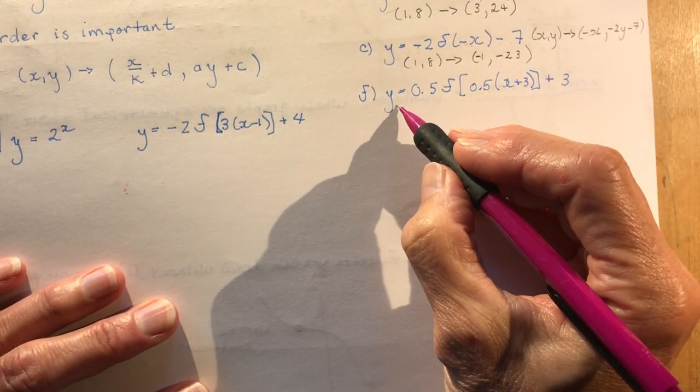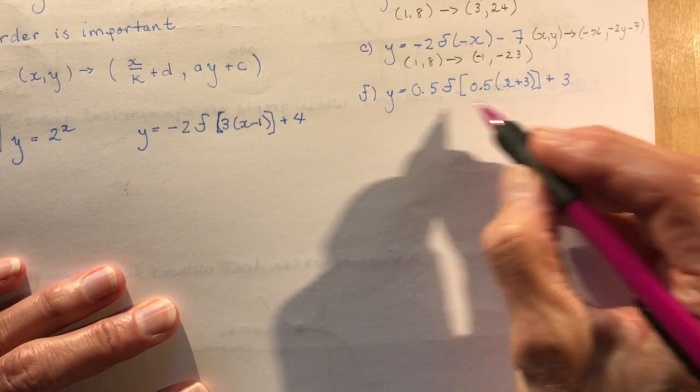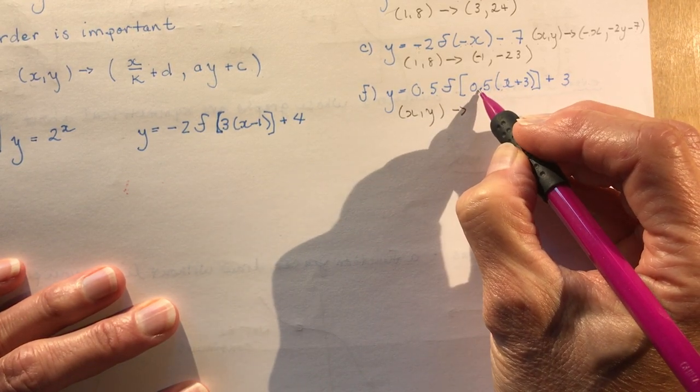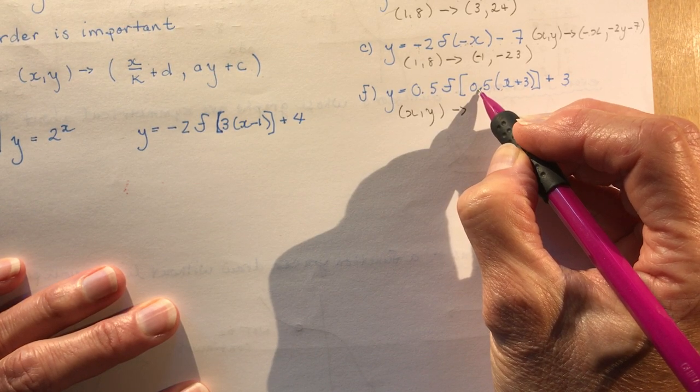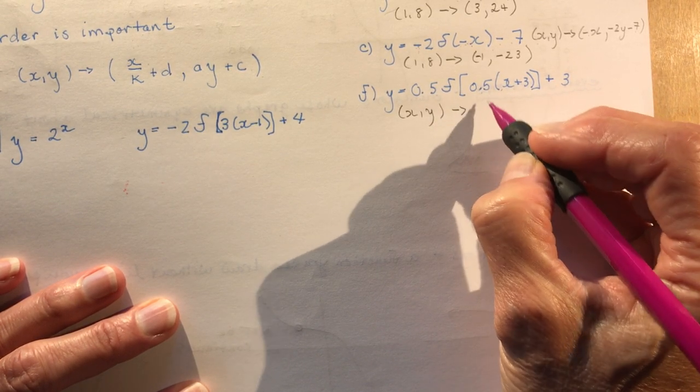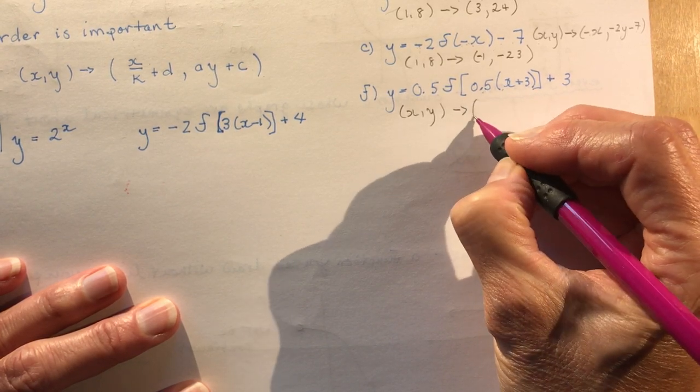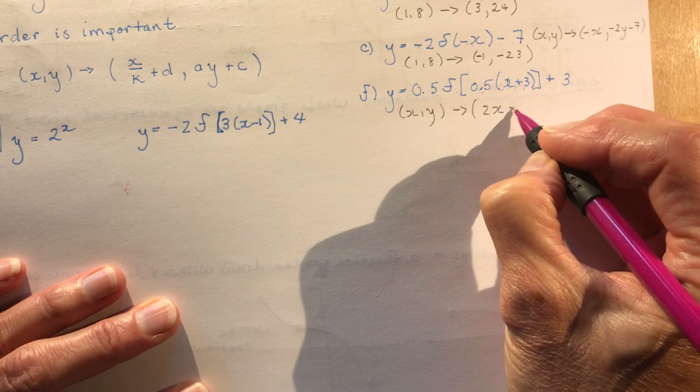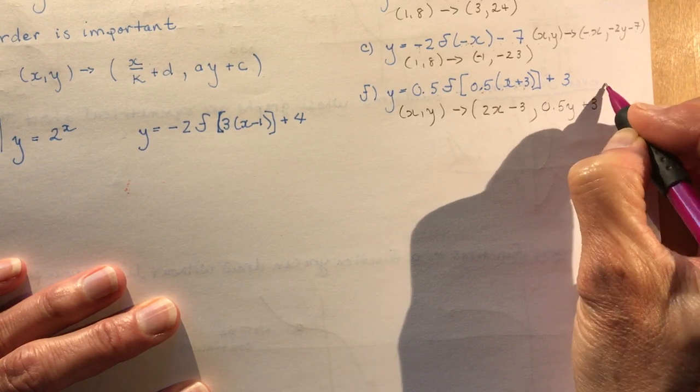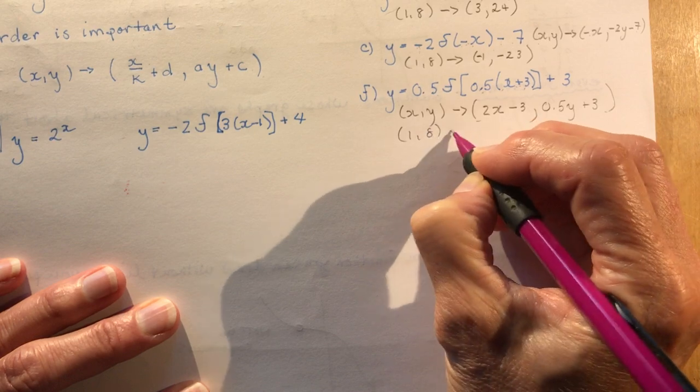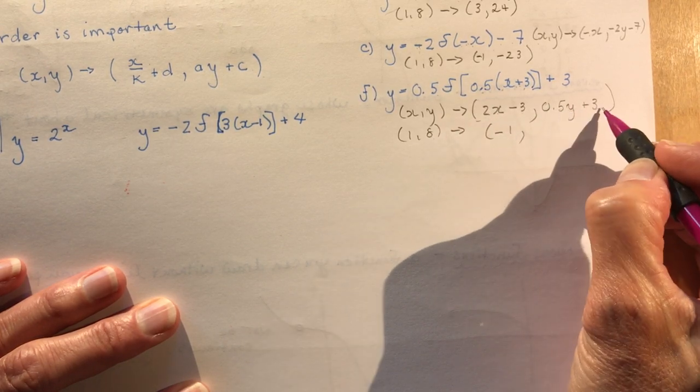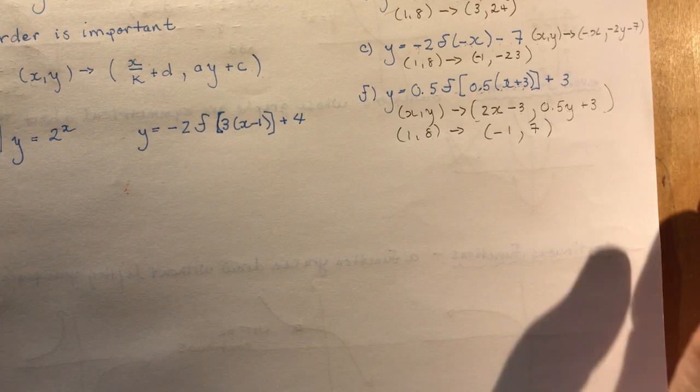And the last one here, I've got all kinds of things going on. That's about as many things as you can possibly do except there's no reflections in there. So let's take a look at the mapping rule. x, y, 0.5. That's a half. So dividing by a half means multiplying by 2, right? 1 divided by half is 2. 1 divided by half, you invert and multiply the fraction. So that's going to give me 2x's. And then I subtract 3. And this one's straightforward. So this is 0.5y plus 3. And there's my new coordinates. So I plug in 1 and 8 now. And I get 2 times 1 is 2 minus 3 is minus 1. And 0.5, a half of 8 is 4 plus 3 is 7. Okay, so that's pretty much what this section is about.